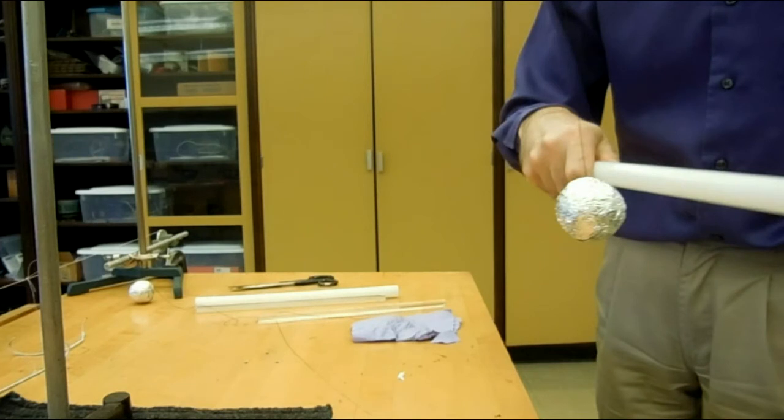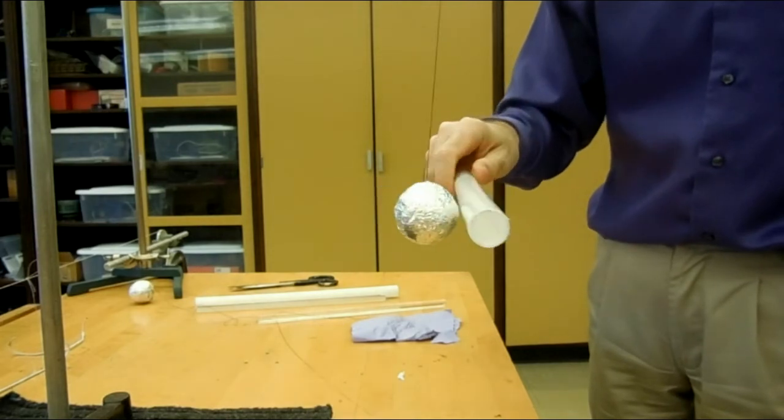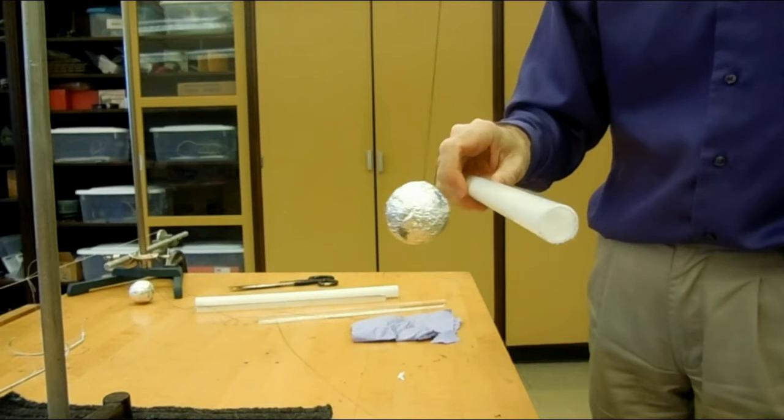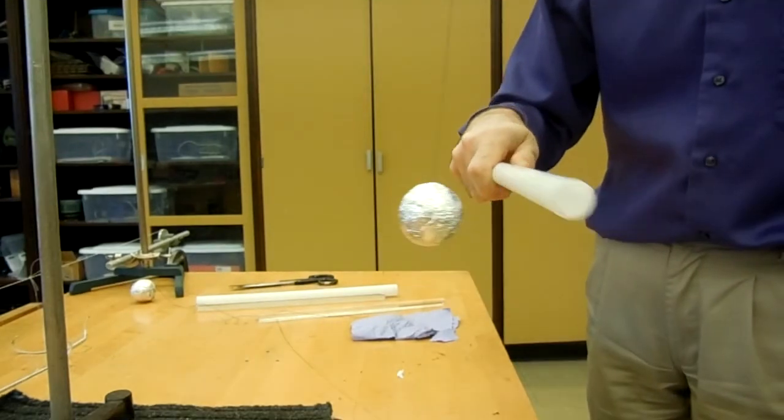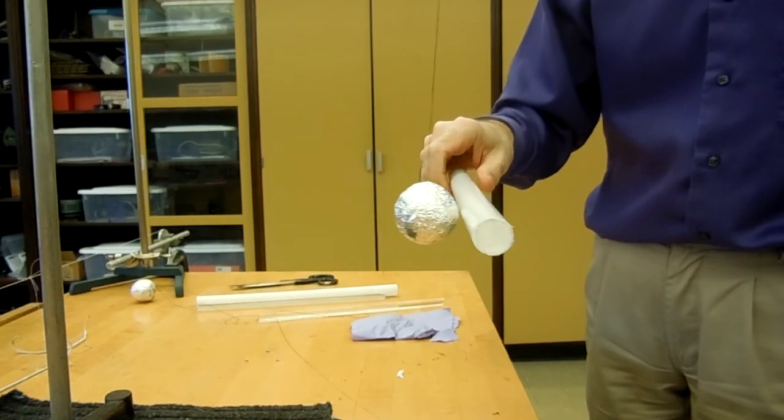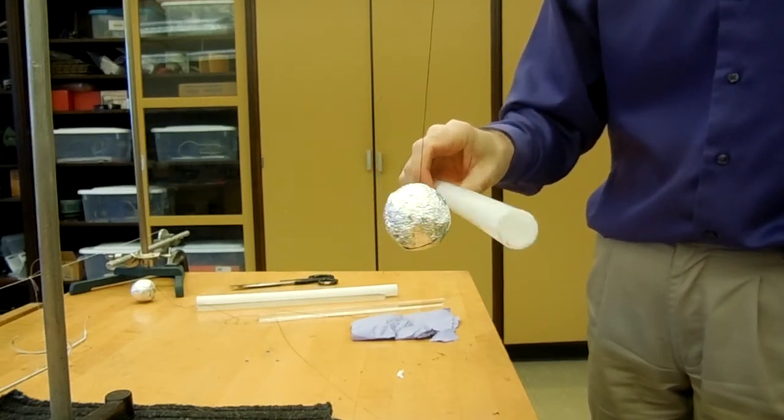So here is that neutral ball and I'm charging up a plastic rod. As we would expect, the ball is attracted to the rod because the rod is charged and the ball is neutral. However, when I touch the rod to the ball, now the ball is repelled from the rod. Let's see that again in slow motion and you'll see that the ball jumps away from the rod when it first touches it.